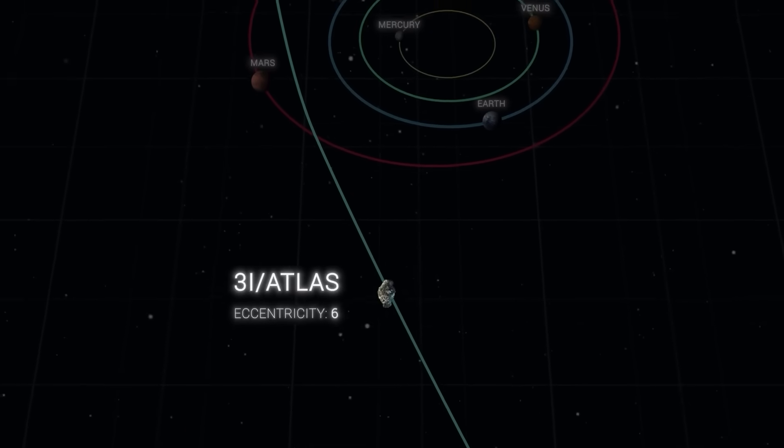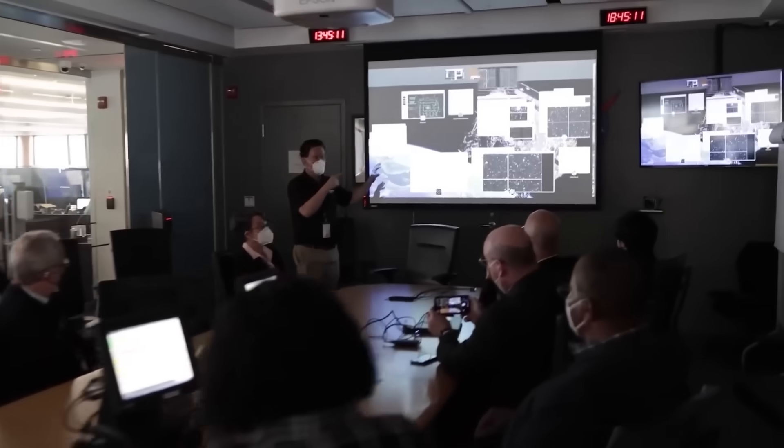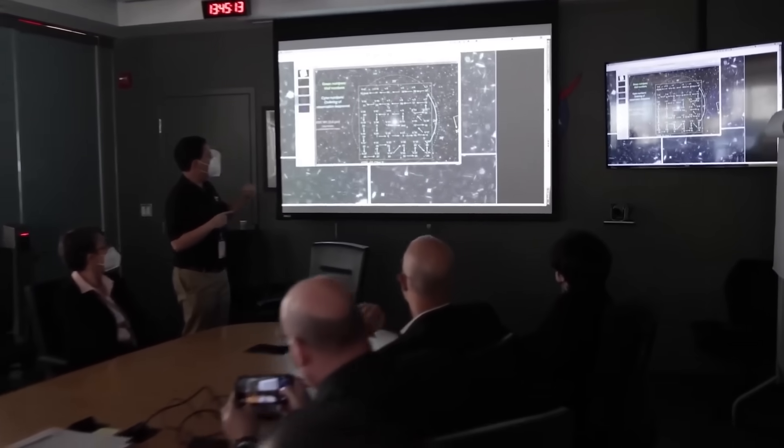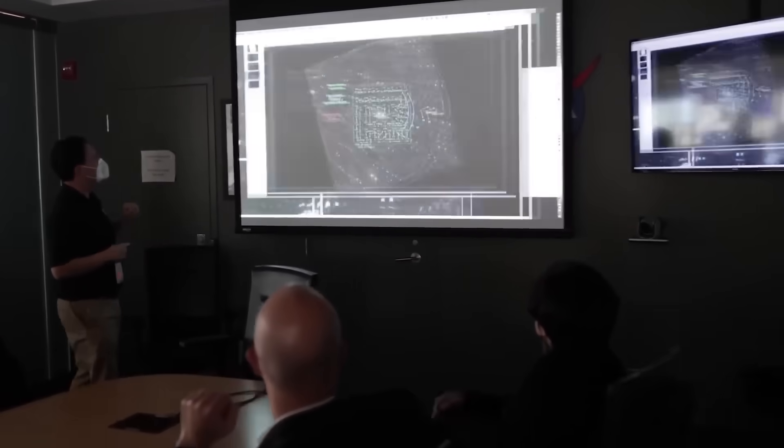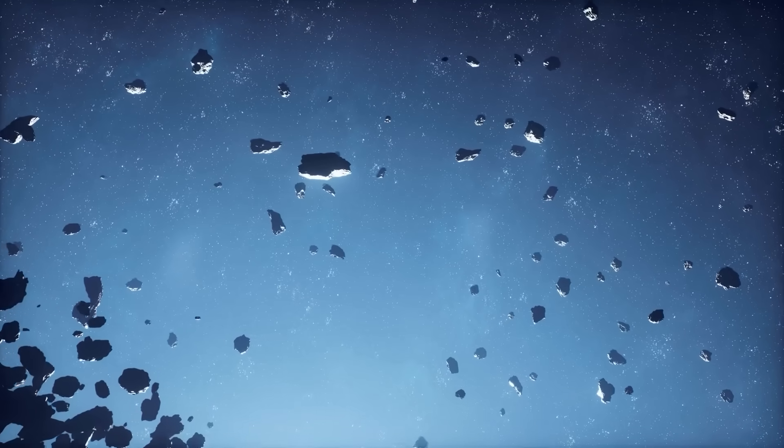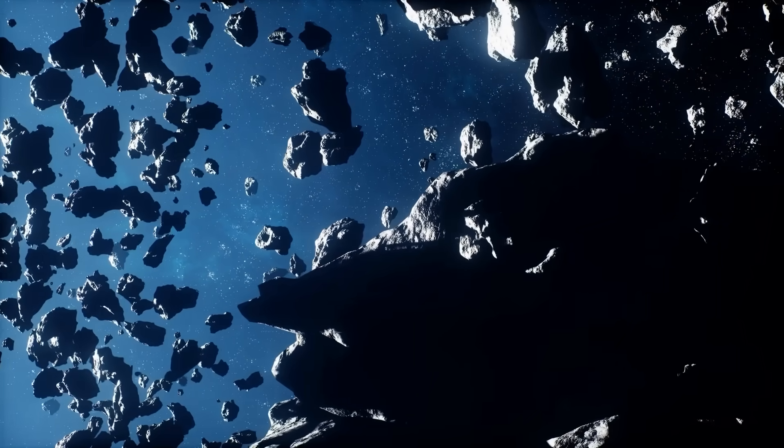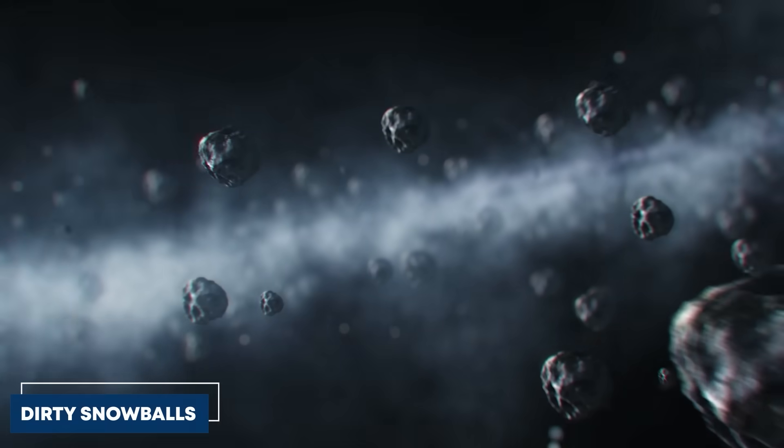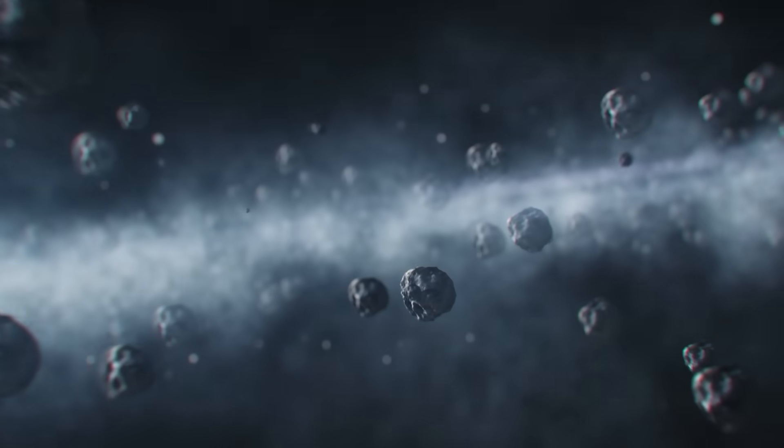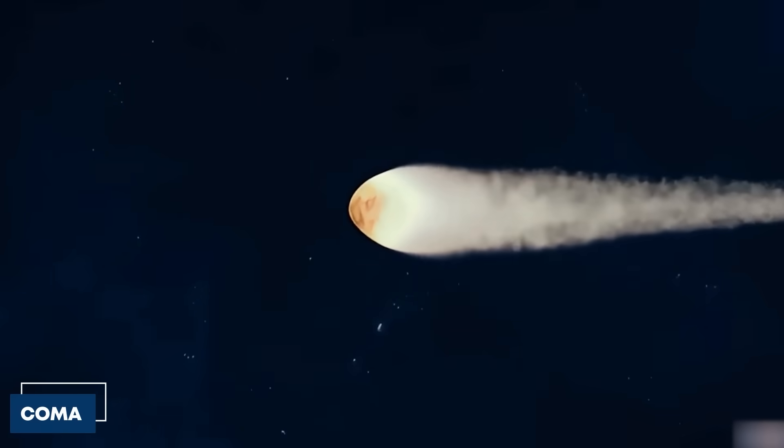But determining what 3i Atlas actually is proved challenging. Upon detection, researchers confronted a critical classification dilemma. Comet or asteroid? The distinction matters enormously. Asteroids are essentially flying mountains, chunks of rock and metal that remain largely unchanged. Comets are dirty snowballs that come alive when solar heat vaporizes their ice, creating the characteristic fuzzy coma and tail we associate with these objects.